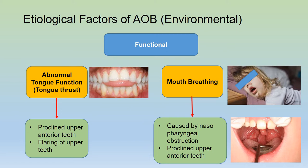Functional factors can include abnormal tongue function, which is tongue thrust. A tongue thrust proclines the upper anterior teeth and causes flaring of the upper teeth, leading to an open bite condition. Mouth breathing caused by nasopharyngeal obstruction — meaning obstruction somewhere along the airway — can also lead to proclined upper anterior teeth and an open bite condition.